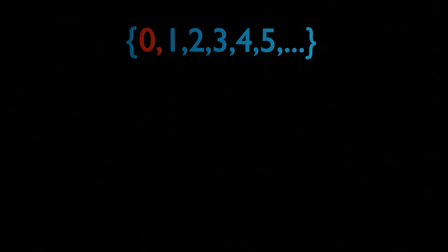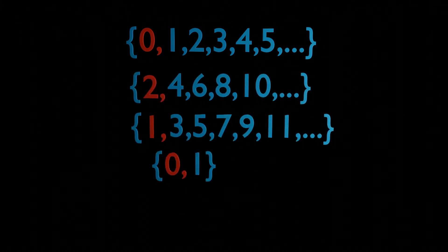For example, the set of the natural numbers with their standard ordering has a least element, 0, but also, any subset of the natural numbers have also a least element.